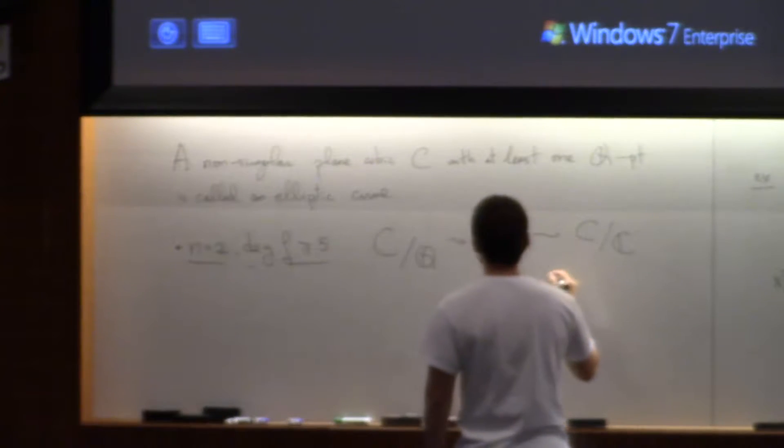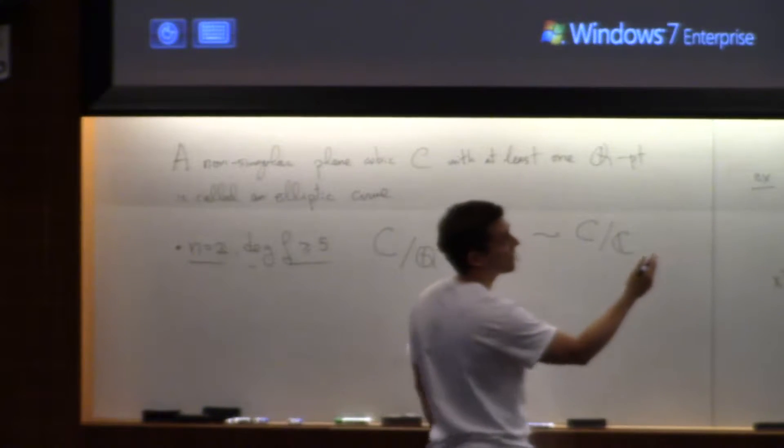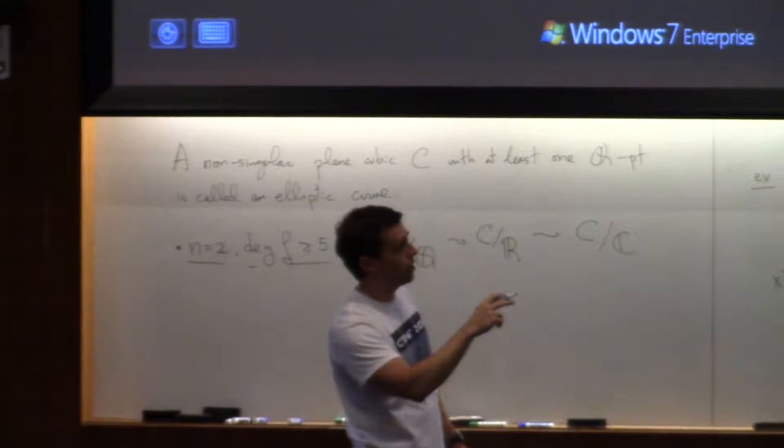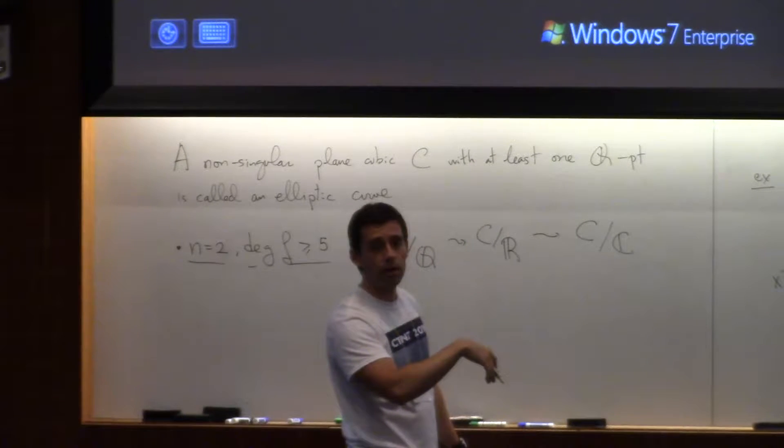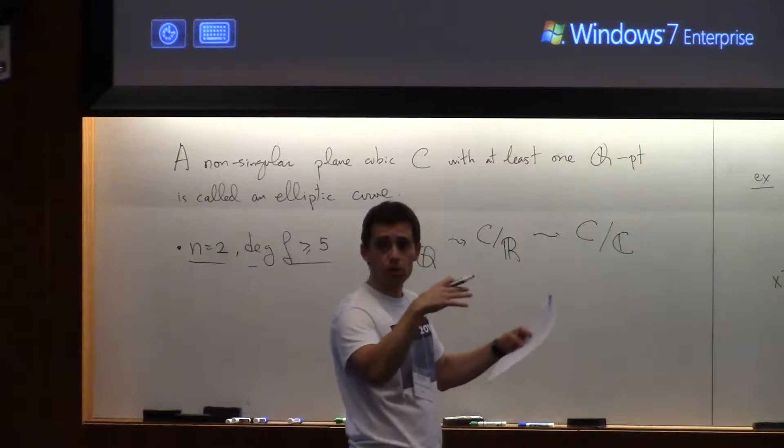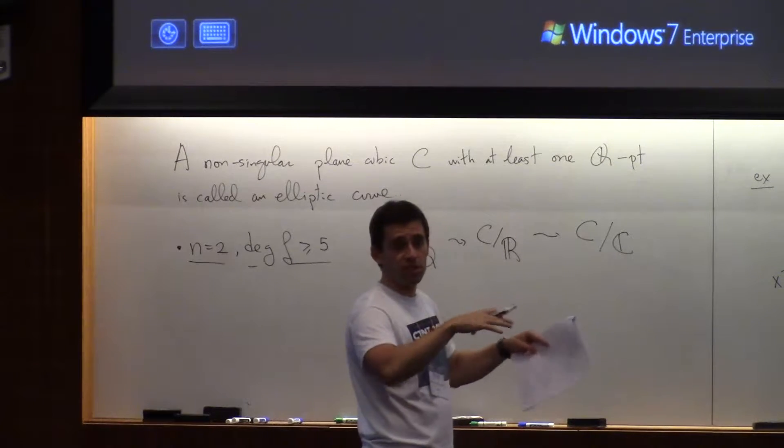So it will give you, for instance, the cases of n equals 2, but degree 1 and 2. Those are actually Riemann surfaces with no holes.